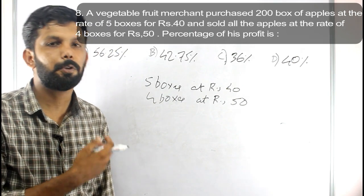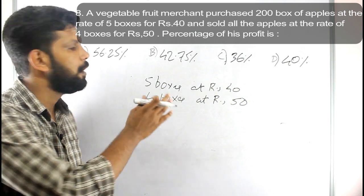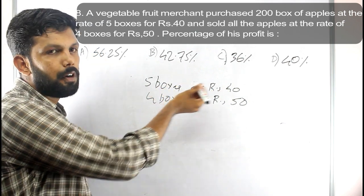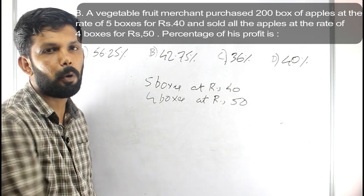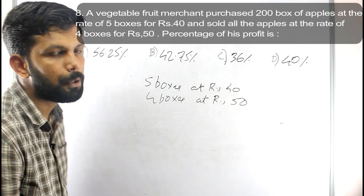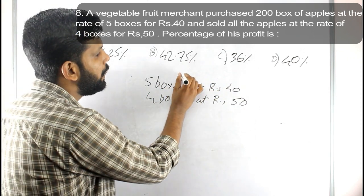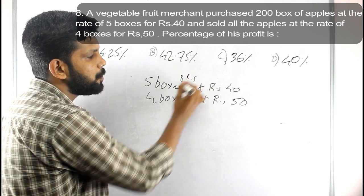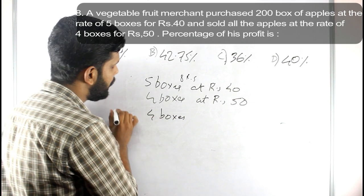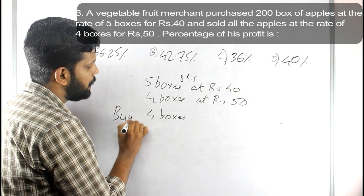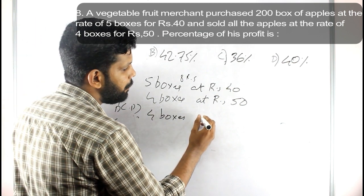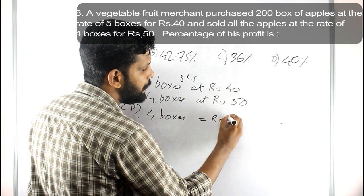We cannot solve this directly from the given data. If we have 5 boxes at the cost price, we need to find a common number of boxes. The cost price for 4 boxes would be Rs. 32, and the selling price for 4 boxes is Rs. 50.